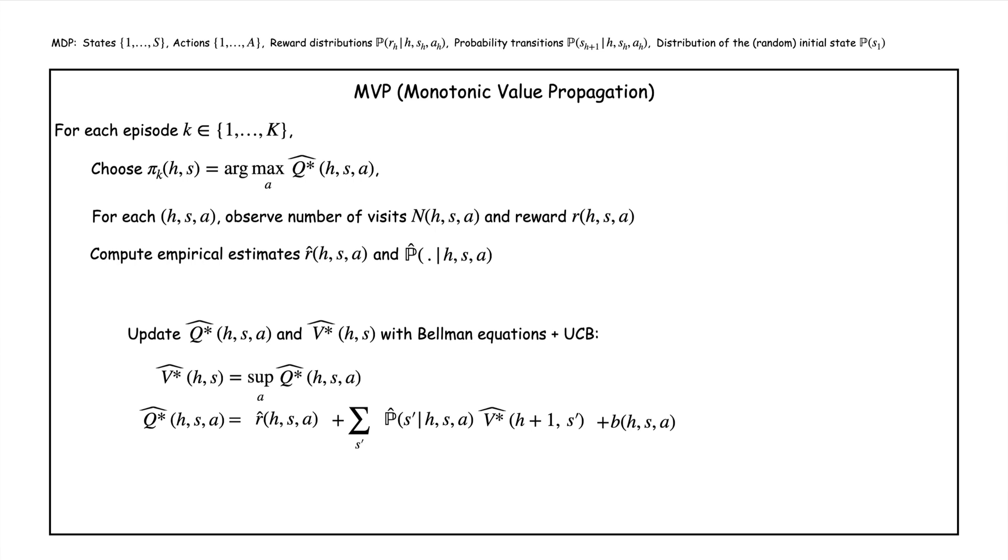Now the algorithm introduced is a wee bit more subtle. What we do here is we do not update the value and q functions at every episode but only when the number of visits n of h s a of one time state and action double h s a is a power of 2. And when we perform the update the reward and transition estimates are only based on the samples which have not been used in previous estimates. In other words if the number of visits of h s a is at least 2 to the n but smaller than 2 to the n plus 1 then it will use the samples number 2 to the n minus 1 plus 1 to 2 to the n.